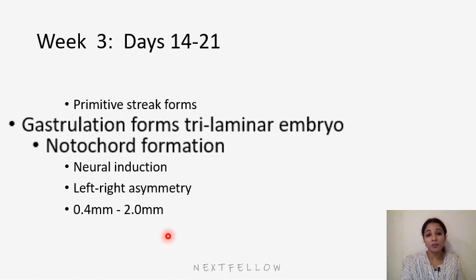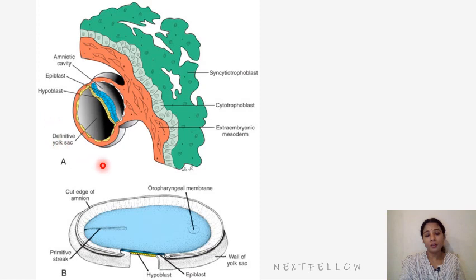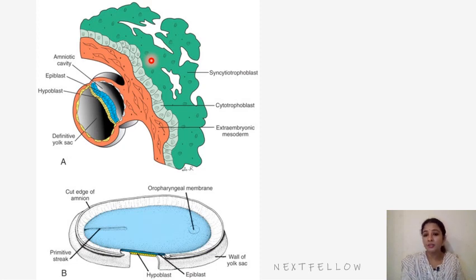The size of the embryo at the end of the second week is 0.4 mm, and by the end of the third week it grows up to 2 mm. At the beginning of the third week, the already-formed structures include the bilaminar germ disc seen at the end of the second week: epiblast, hypoblast cells, amniotic cavity, yolk sac cavity, extra-embryonic coelom, extra-embryonic mesoderm, cytotrophoblast, and syncytiotrophoblast — all established in the second week.